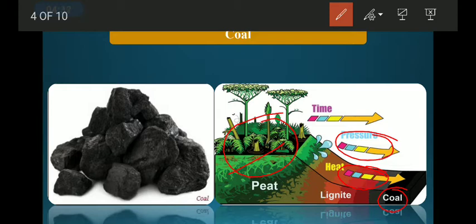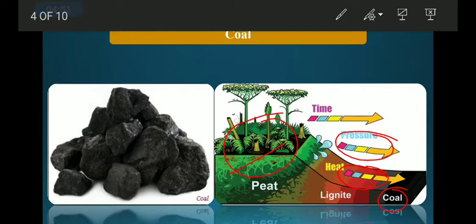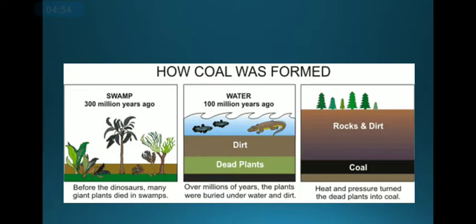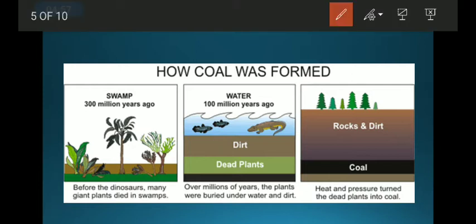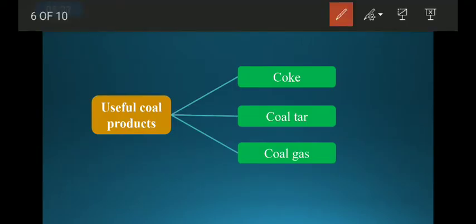Since they are made from vegetative parts, they are also called fossil fuels. This coal is processed in industry and we get many useful products. Here you can see that millions of years ago, before dinosaurs, there were giant plants. They were buried under water and dirt. Then deposition of soil, rock, and dirt caused them to decompose and form coal.